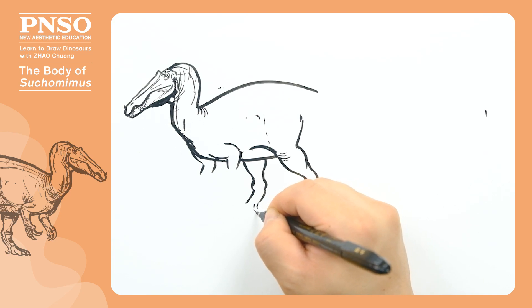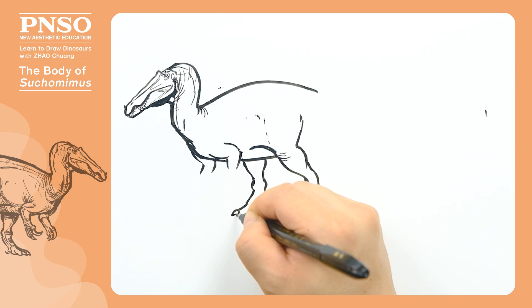It had four toes on each foot, three of which were thicker and used for walking, and the other was small.